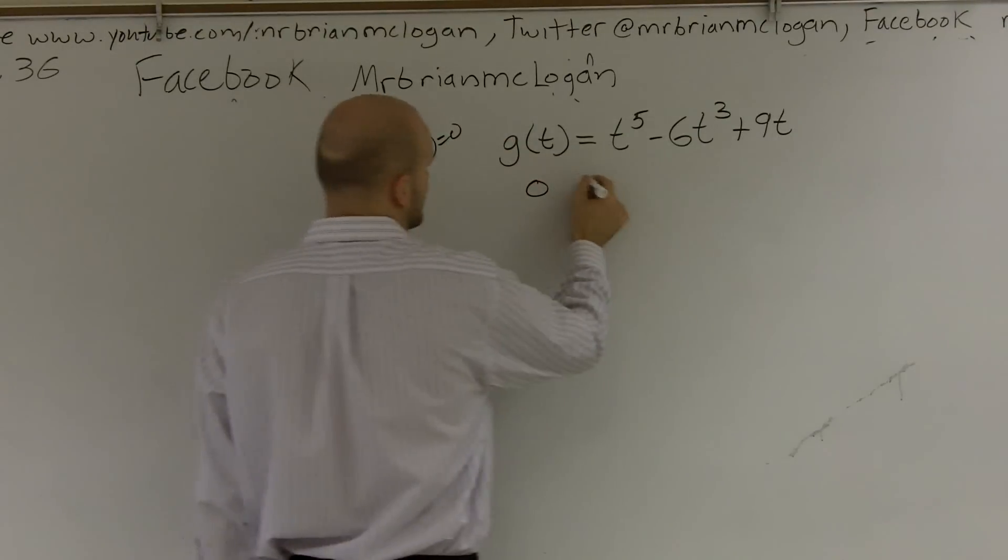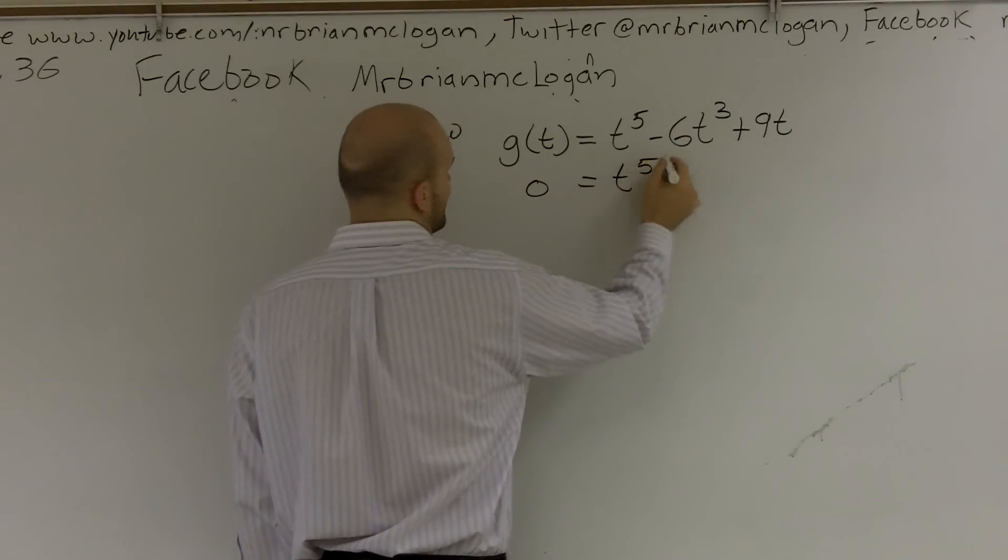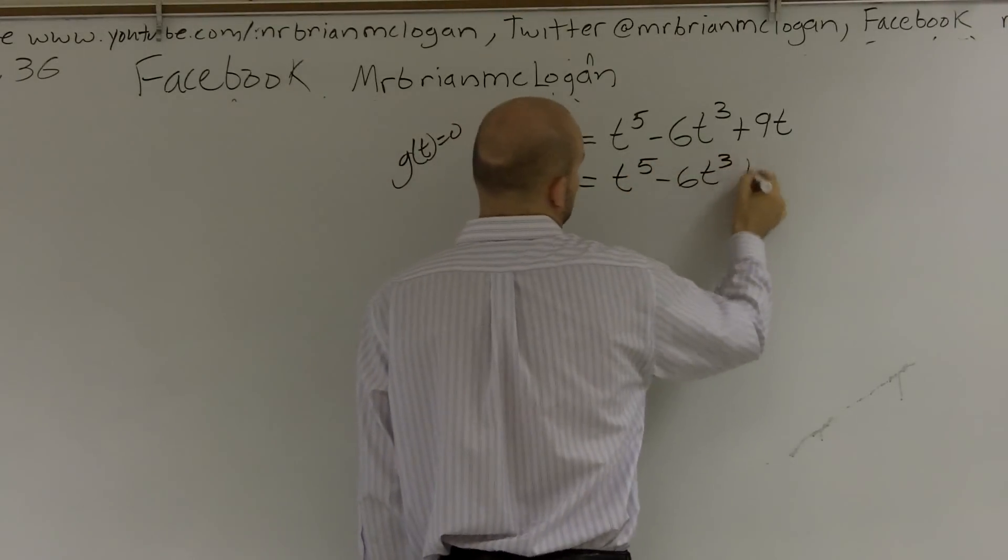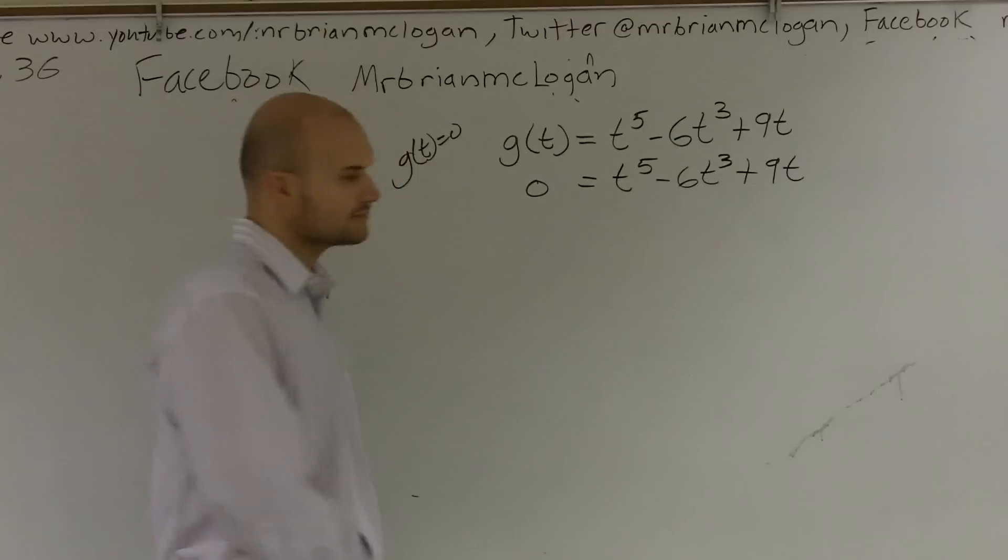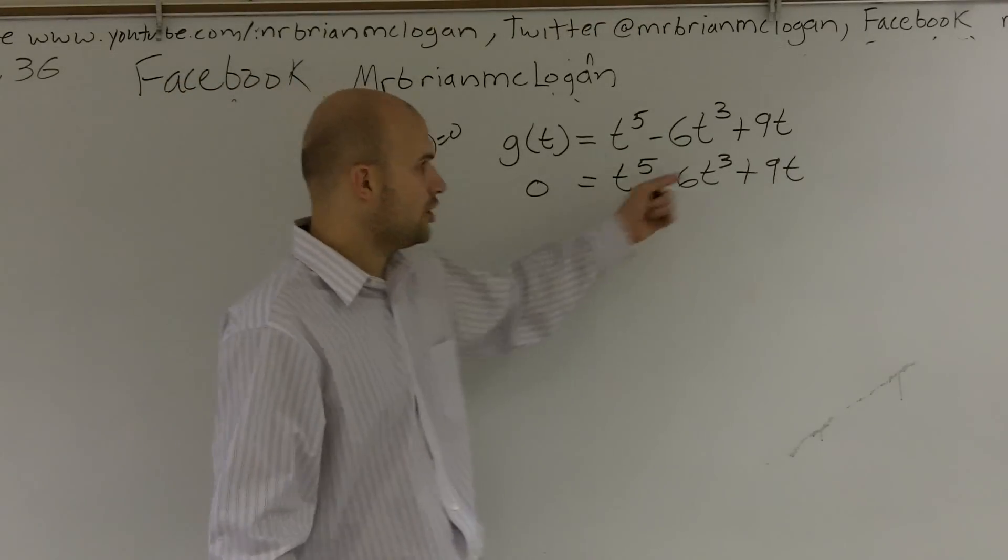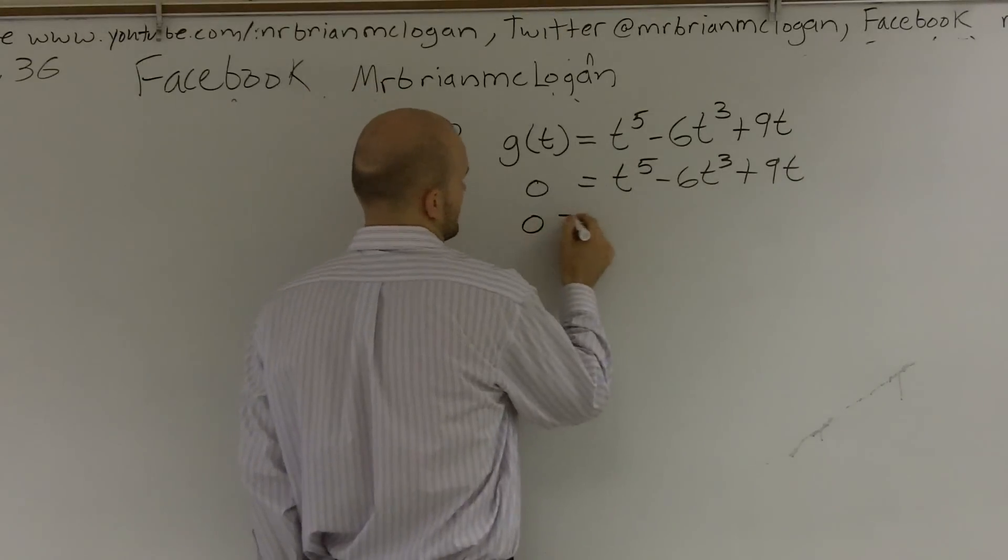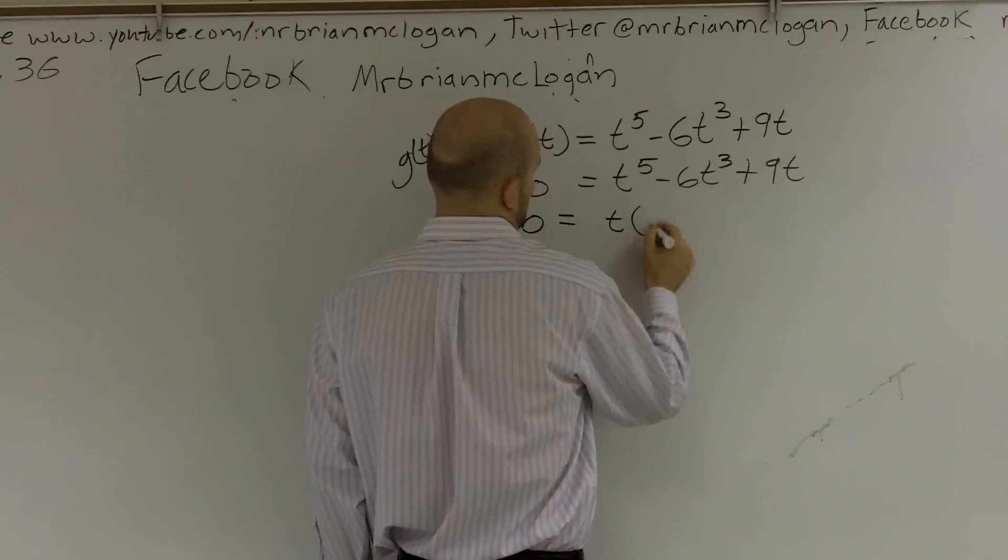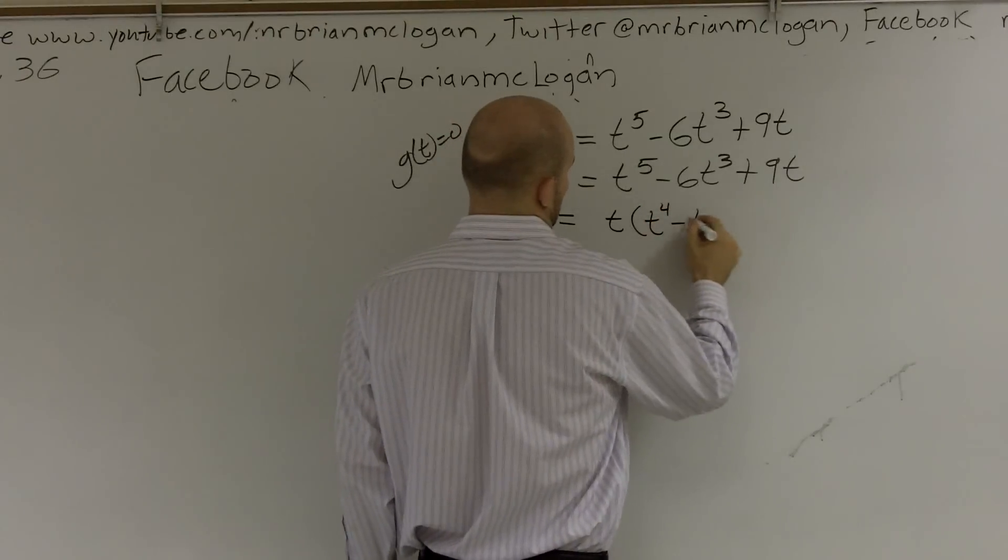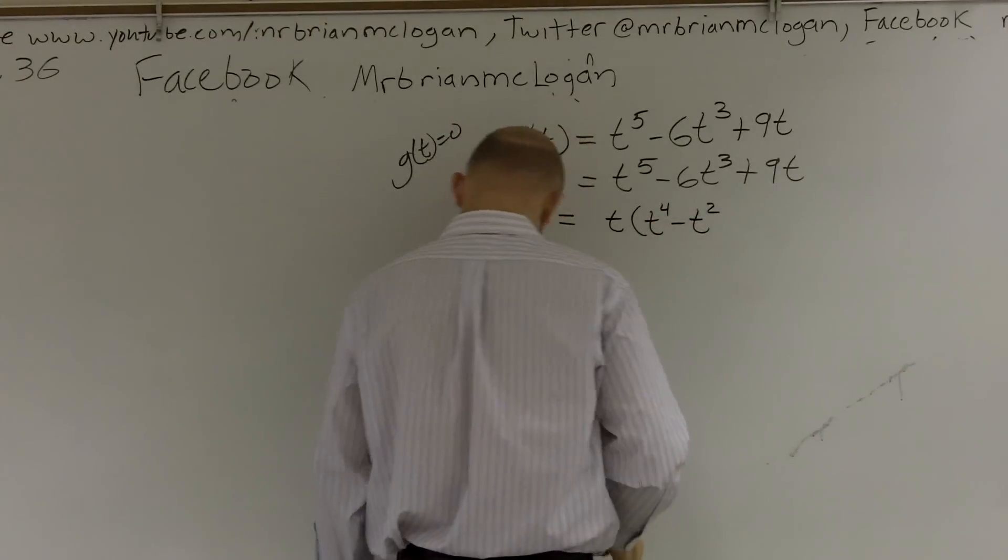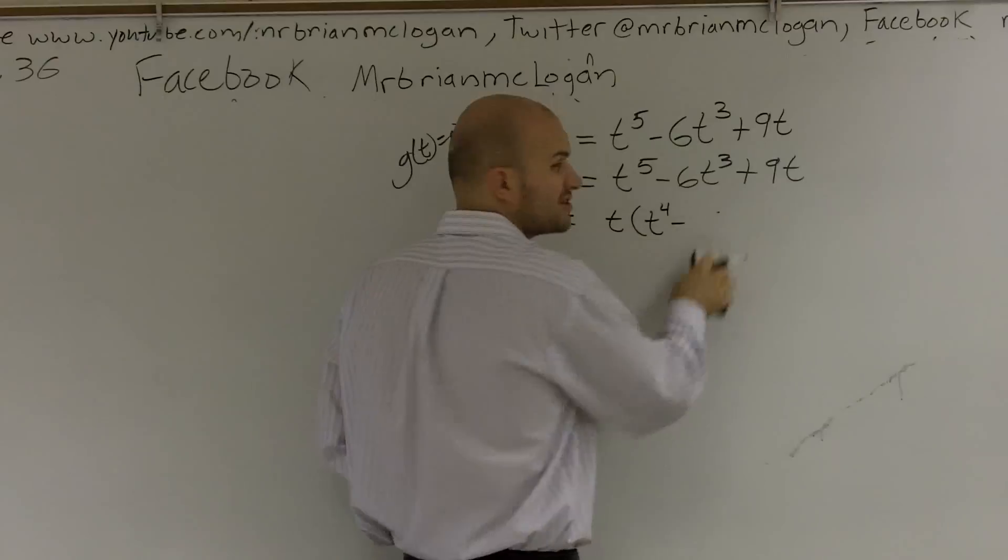Zero equals t to the fifth minus 6t cubed plus 9t. Next thing, factor out your t. All these share a t, you can factor it out. There's a 6 there.